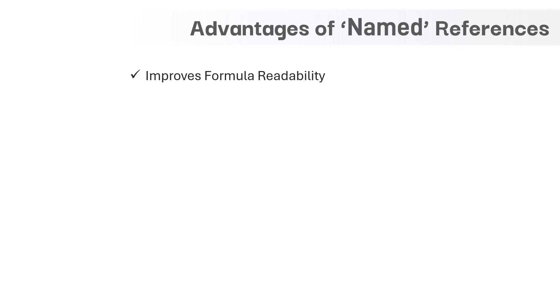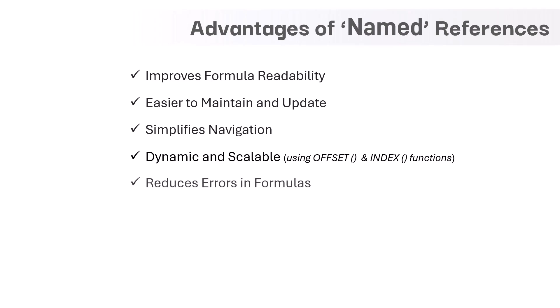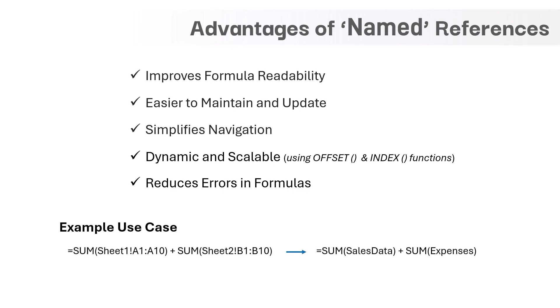Now that we have covered all key features of named references in Excel, let's go through the advantages of using this feature. First, it improves readability — instead of complex cell references, you can assign meaningful names and use them in formulas for easier understanding. Second, it is easier to maintain — if cell references change, you only update the name definition and all related formulas update automatically. Third, it simplifies navigation — named references act as bookmarks, letting you jump to a specific range by selecting its name from the name box. Fourth, it is dynamic and scalable — with functions like OFFSET and INDEX, named ranges can automatically adjust as your data changes. Fifth, it reduces errors — using meaningful names instead of cell references minimizes the risk of mistakes in Excel formulas, making formulas clearer and easier to understand.